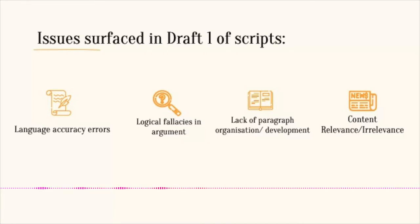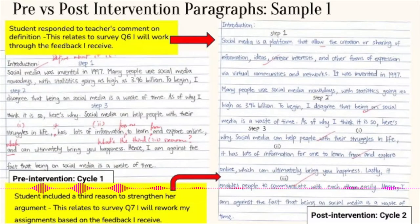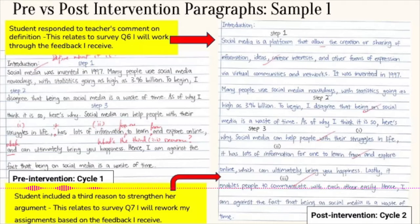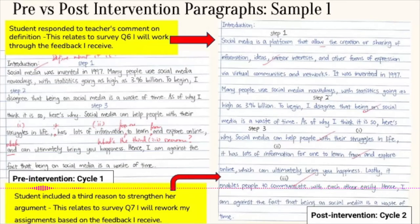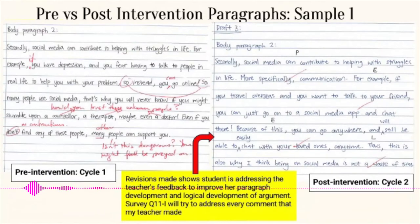The next slides show some samples of how the students progressed. The picture on the left is the student's first draft where issues surface, and you can see the annotations the teacher made based on the rubric. For example, to reduce cognitive load we focused on certain things only — such as the development of the paragraph — so the student could identify their issue and work on it. You can see the improvement on the right, which is the second draft.